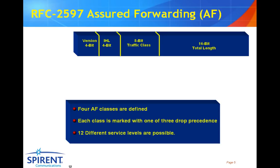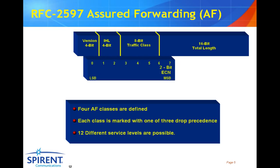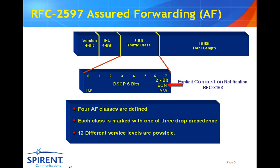RFC 2597, or assured forwarding, AF for short, is perhaps one of the most popular mechanisms used today within corporate or enterprise networks for defining traffic class, or the prioritization that different streams of traffic are going to take when they move across the network. Again, we use six bits within the traffic class field, with the last two bits used for explicit congestion notification with RFC 3168. There are actually four distinct classes defined by RFC 2597, and within each one of these classes there are three subclasses, giving you 12 different services in total.